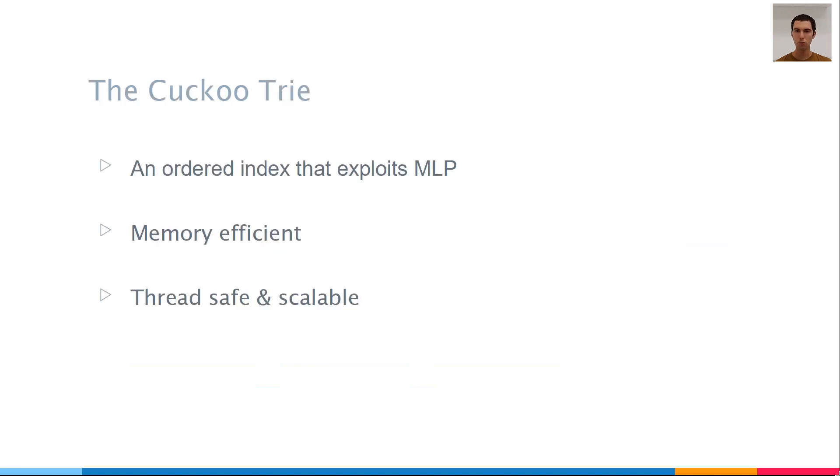We developed the cuckoo trie, which is an ordered index that does use MLP. This means that it can be faster, because it is not limited to the same serial access pattern that other indexes have. It requires about the same amount of memory as other indexes, and it is also thread-safe and can efficiently use multiple cores.